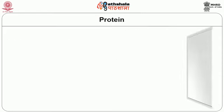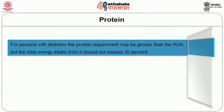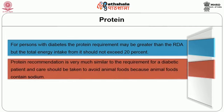Next, protein: protein intake for persons with diabetes may be greater than the recommended dietary allowance, but total energy intake from protein should not exceed 20 percent. Care should be taken to avoid animal foods because they contain sodium which is deleterious to blood pressure. Animal foods are also rich sources of fat, so the diabetic should be cautious and include lean foods and white meat rather than red meat and other fat organ meats.